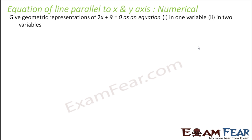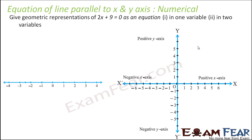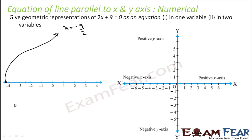For a similar equation, we represent it as one variable and two variables. So 2x plus 9 equals 0 gives x equal to minus 9 by 2, which is minus 4.5. This is the solution for one variable on the number line. For two variables, x equal to minus 9 by 2 has points such as (−9/2, 0) and (−9/2, −2). Joining these points gives a line parallel to the y axis.